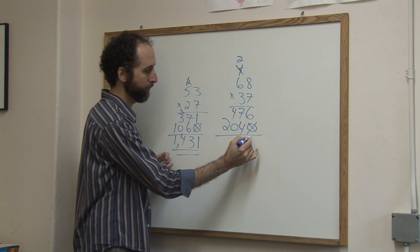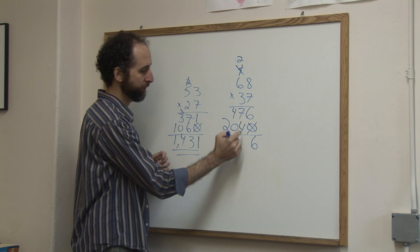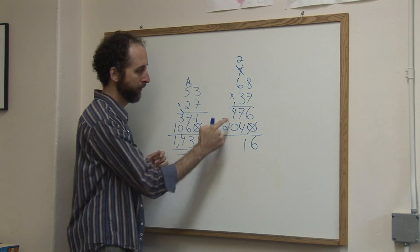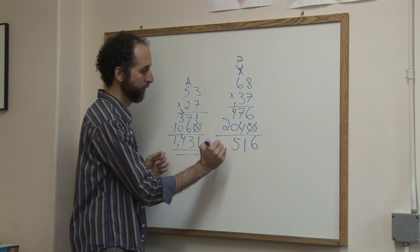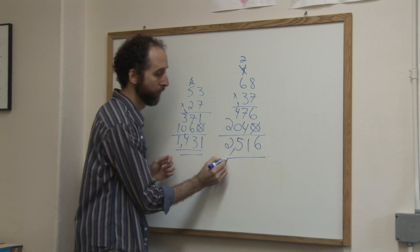Then I add down: 6, 7 plus 4 is 11, carry the 1, 4 plus 1 is 5, and drop the 2. Put in a comma, and you've got it.